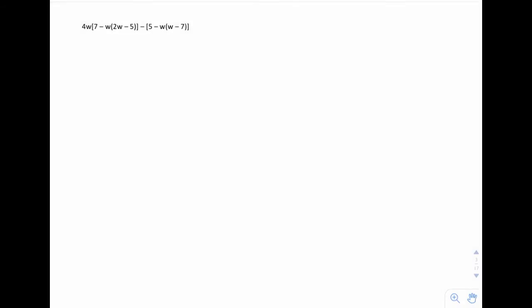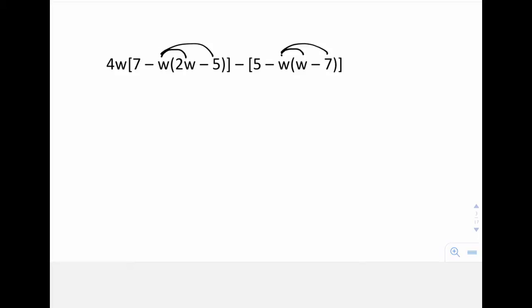Here we have two sets of brackets and within each of those brackets we have an embedded set of brackets. So what I'm looking to do is resolve what's on the innermost sets of brackets first. Namely, I'm looking to multiply this negative w inside here and here, as well as this w inside here and here.